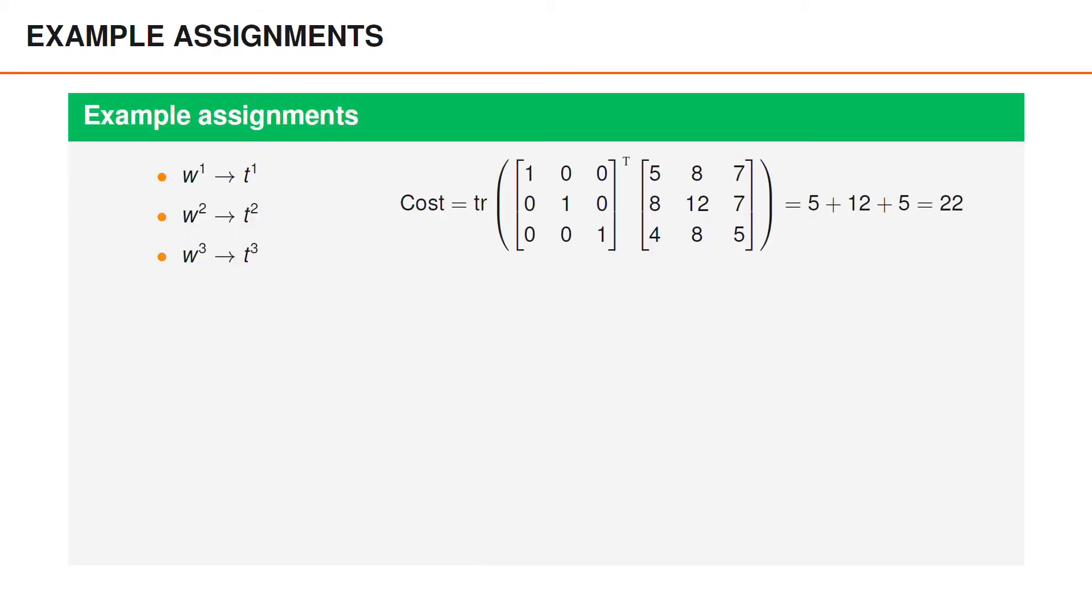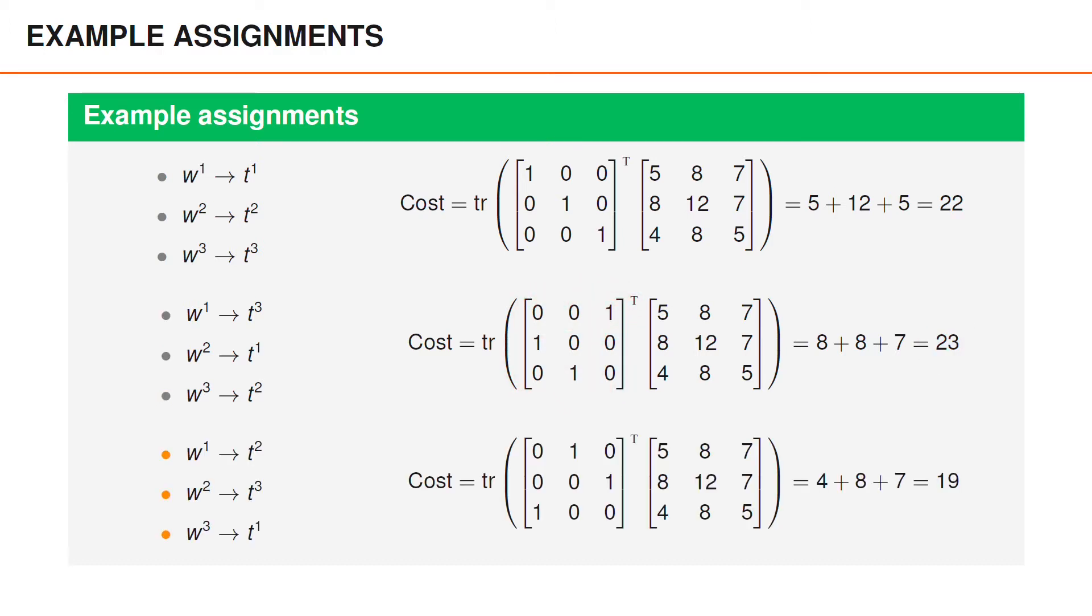So let's consider the same example assignments again. For the first assignment that we considered, we get the assignment matrix shown here, and the cost becomes 22, just like before. For the second assignment, we get this assignment matrix, and the cost is 23. And for the third assignment, we get this assignment matrix. And it's straightforward to verify that the cost for this assignment matrix is 19.